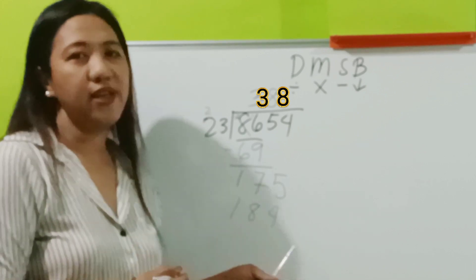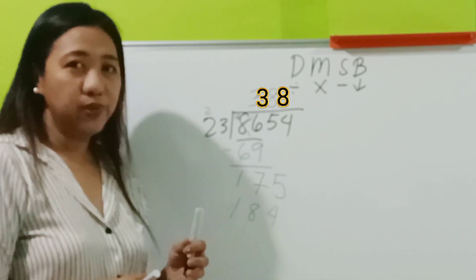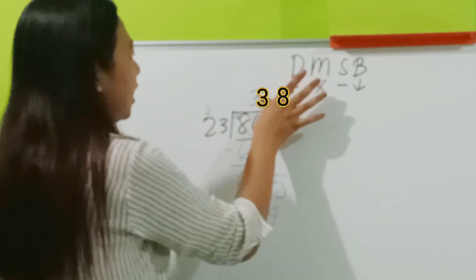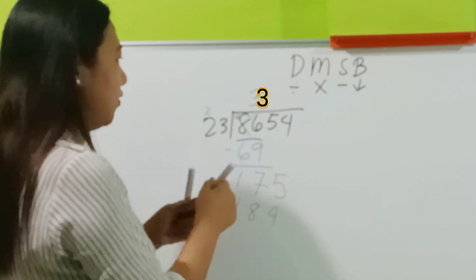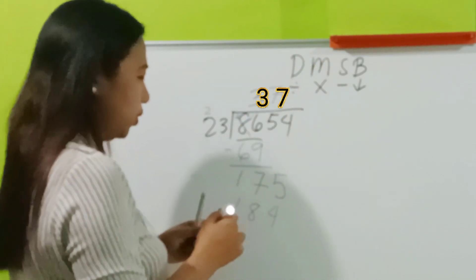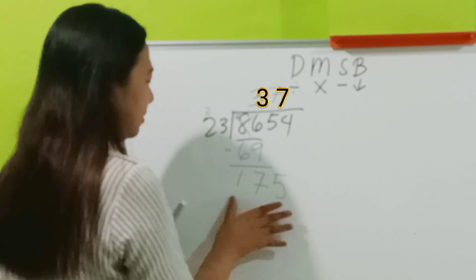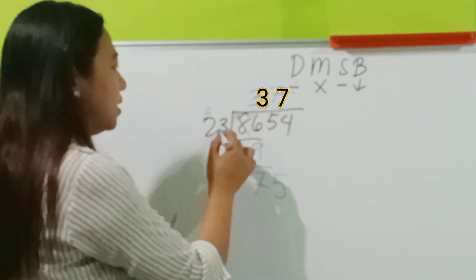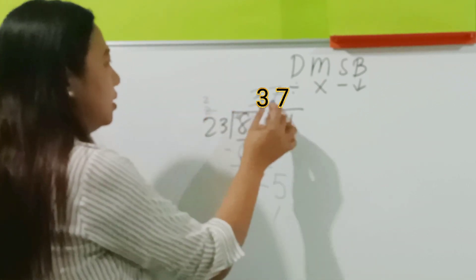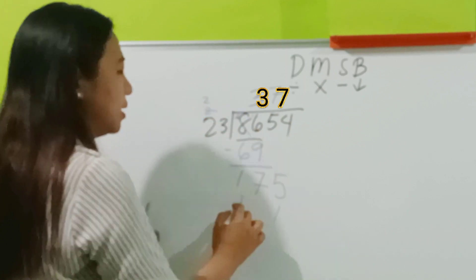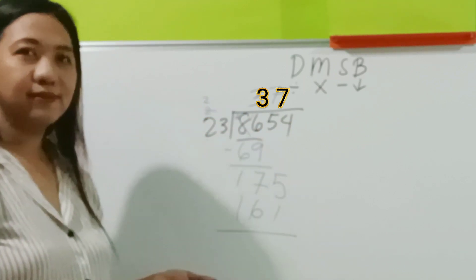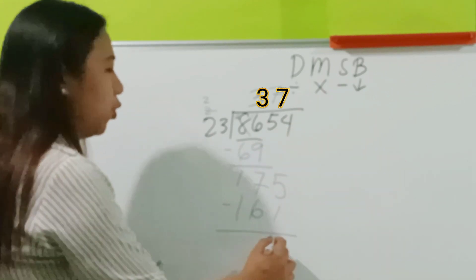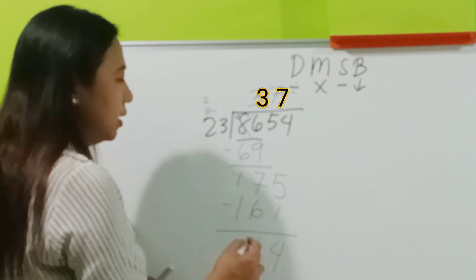So, what do we do? We have to decrease the number by 1. So, 8 minus 1 is 7. Let's multiply again. 7 times 3 is 21. 7 times 2 is 14, plus 2 is 16. So, is it okay now? Yes, we can now proceed to subtraction. 5 minus 1 is 4. 7 minus 6 is 1.